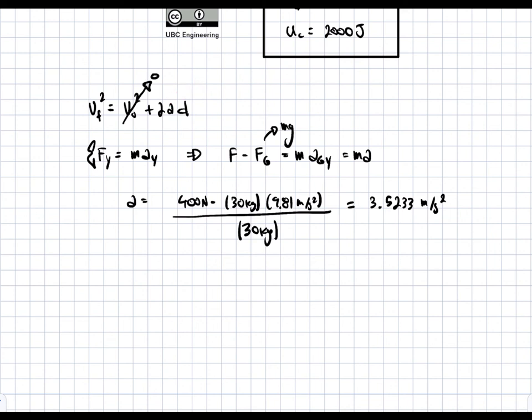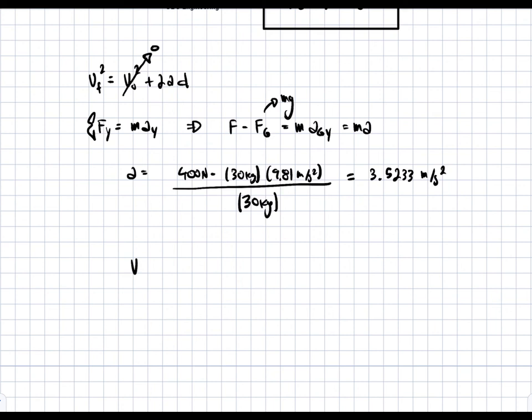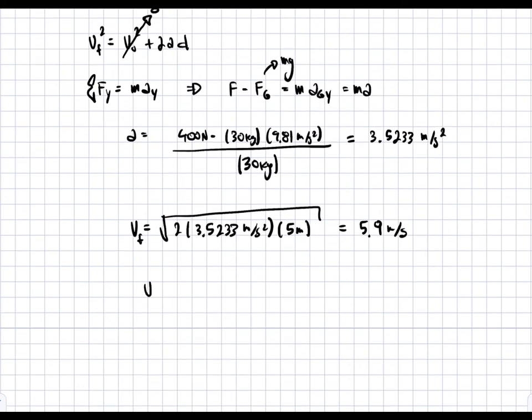We have a distance and we can find the final velocity. So the final velocity is going to be equal to V equals the square root of 2 times 3.5233 meters per second squared times the distance, which is 5 meters. And we square root that leads us to an answer of 5.9 meters per second. So the final velocity VF is equal to 5.9 meters per second. And that is our final answer.